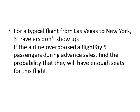One last problem. For a typical flight from Las Vegas to New York, three travelers don't show up. Lambda equals 3. Typical, usual, average. If the airline overbooked a flight by five passengers during advanced sales, find the probability that they will have enough seats for this flight. So one flight means that t is one.